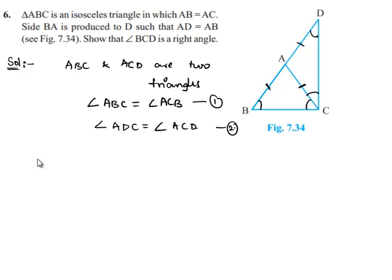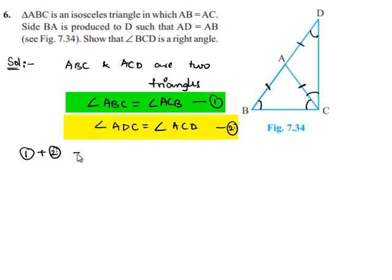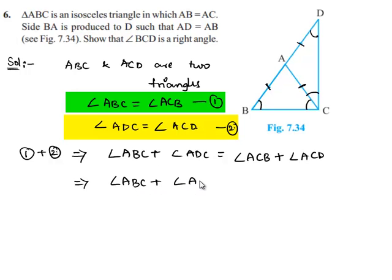Now, on adding both the equations, we get angle ABC plus angle ADC is equal to angle ACB plus angle ACD, which implies angle ABC plus angle ADC will be equal to the whole angle BCD.